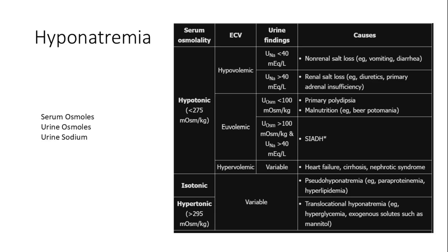Hyponatremia can arise from various conditions. To evaluate it, we assess serum osmoles, followed by urine osmoles, followed by urine sodium. Hypertonic or isotonic hyponatremia is due to falsely increased osmolarity in hyperglycemia, hypertriglyceridemia, paraproteinemia, or mannitol intake. Hypotonic hyponatremia with serum osmolality less than 275 is the true hyponatremia.